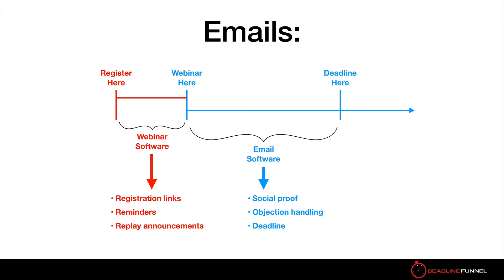Everything that's not included in that — for example, after the webinar, between the webinar and the actual deadline — you ideally want to use something like Drip, ConvertKit, Ontraport, Infusionsoft, ActiveCampaign, etc. We integrate with so many different services, so for things like the sequence of emails that go afterwards — the social proof, the objection handling, and of course the deadline — you want to use your own email software. You could also have a regular page with the video built in ClickFunnels or Leadpages and use that as your replay system, using your email software to send out the replay link.